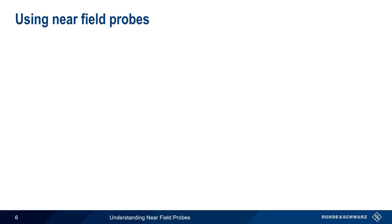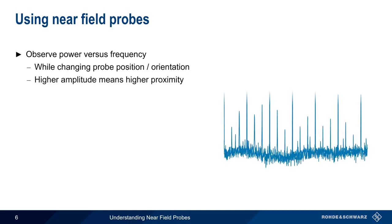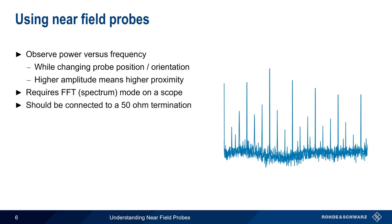The basic procedure for using near field probes is as follows. The instrument is set to observe power versus frequency while the position and or orientation of the probe is changed. An increase in signal level indicates closer proximity to the source. Power versus frequency is the default measurement result on a spectrum analyzer, but an oscilloscope will need to be in FFT, or spectrum mode, in order to observe frequency domain information. If an oscilloscope is used, it should also be set to have a 50 ohm termination.